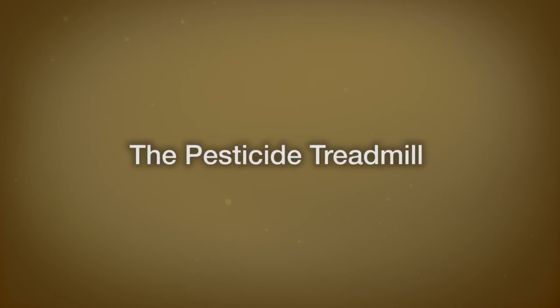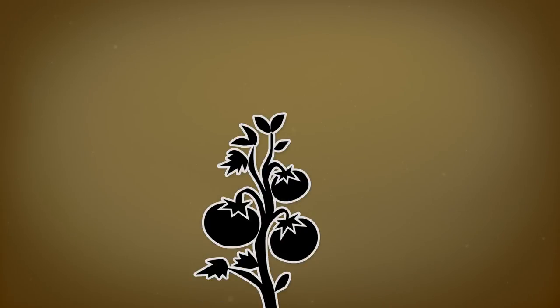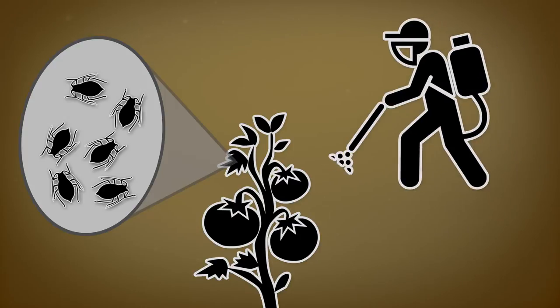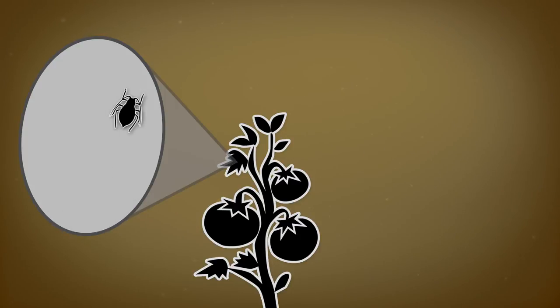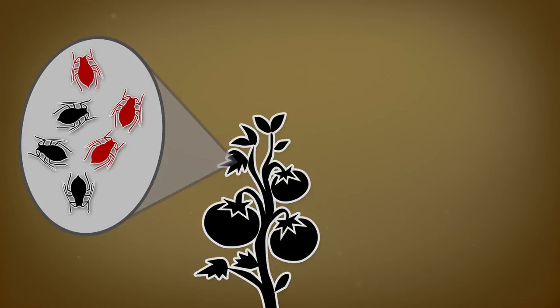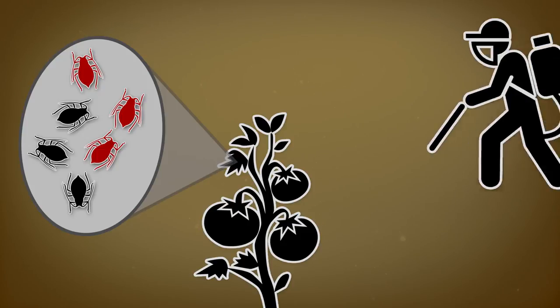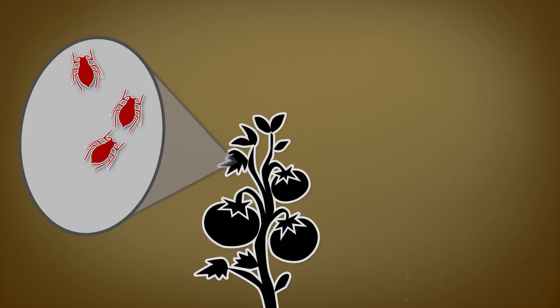There's also another problem with pesticides: the pesticide treadmill. Consider a crop infested with pests. The farmer develops and applies a new pesticide. Most of the pests die, allowing the crop to do better for a period of time. But some resistant individuals live on and reproduce. Over time, the proportion of resistant individuals in the pest population grows. So the farmer applies the pesticide again with little result and looks for a new pesticide, and this process starts again — thereby being called the pesticide treadmill.